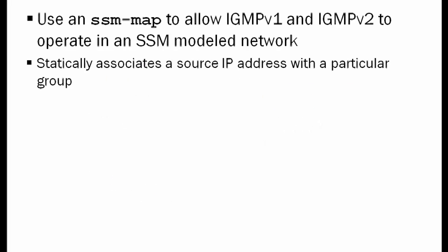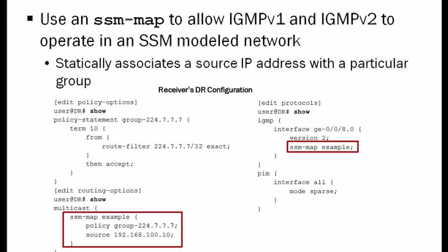What if a user PC is incapable of supporting IGMP version 3 — they're only IGMP version 1 or version 2? Will they be able to participate in a source-specific multicast stream? The answer is yes. We can statically configure this functionality on the designated router for the receiver, even though the receiver is only sending an IGMP report using version 1 or version 2.